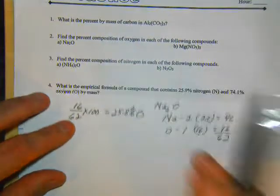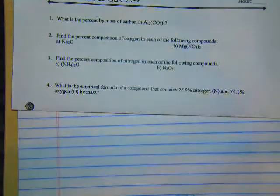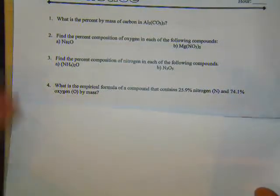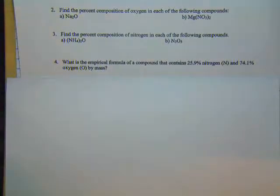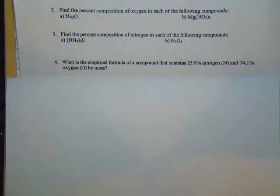Part B works the same way, and in problem three you're looking for nitrogen in each of those — they all work the same way. Let's move down to number four. Number four states: what is the empirical formula? Remember, the empirical formula is the lowest whole number ratio of a compound that contains 25.9 percent nitrogen and 74.1 percent oxygen by mass.